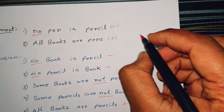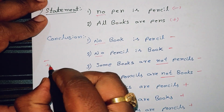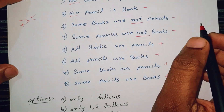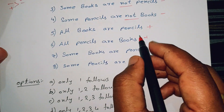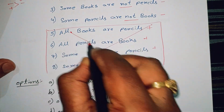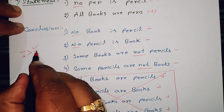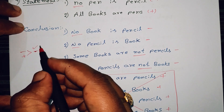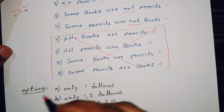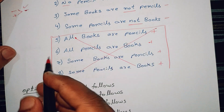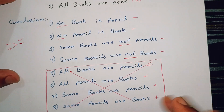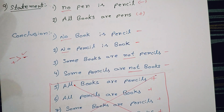One negative and one positive statement means the problem is to identify the correct negative statements. So if there is a positive statement, it will be cancelled. We will focus on the negative statements. When a statement is wrong, it's not a correct answer. So we answer using the negative statements — they are correct.